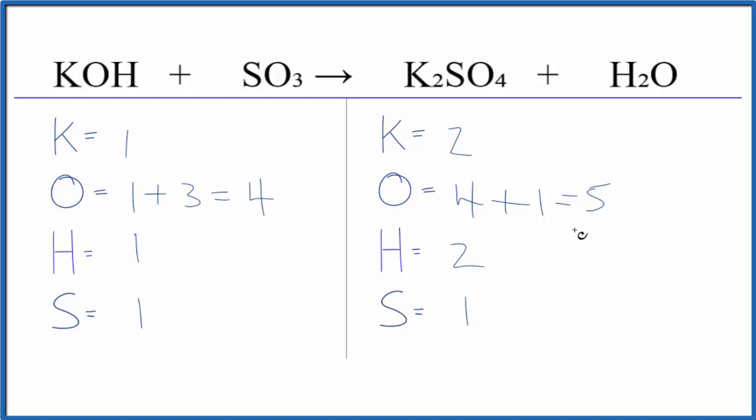So to balance it, why don't we start with the potassium? Let's leave the oxygen and hydrogen till last. So I'll put a two in front of the KOH, one times two, that'll give me two potassium atoms. They're balanced.